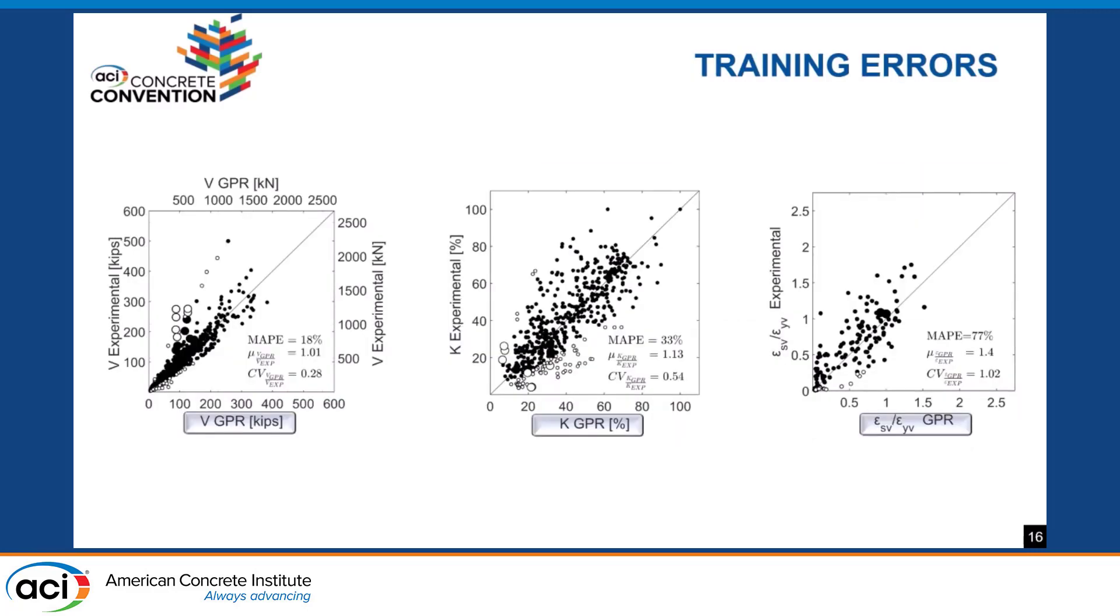These are results from training our algorithms using k-fold cross-validation. The x-axis represents the predictions from our machine learning algorithms. The y-axis are experimental values. We have found 18%, 33%, and 17% mean absolute percent errors for predictions of shear histories, stiffness, and stirrup strain.